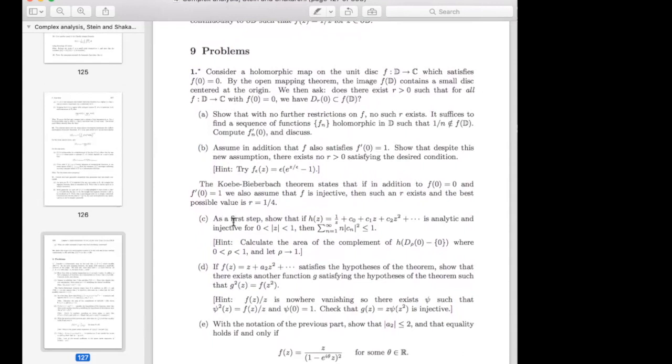So here is a problem, and it leads you through a proof of the Koebe one-quarter theorem. So I actually would prefer to have some of this stuff in the text, but this is how this book actually covers a lot of the material which is not really in the text that's in a book like Greene and Krantz. You have to do it yourself.